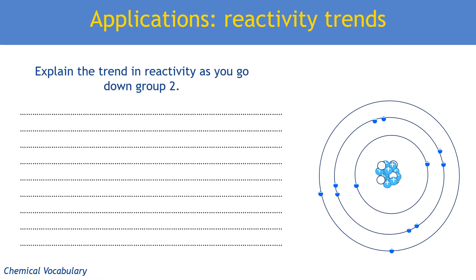Let's look at an example where we use these ideas to explain the trend in reactivity as you go down Group 2. The first thing to think about is what Group 2 metals have in common: they all lose their outer shell electrons when they react. So if there is a difference in reactivity, it is related to how easy or difficult it is for the atom to lose its outer shell electrons.